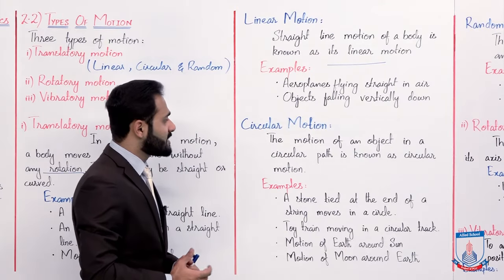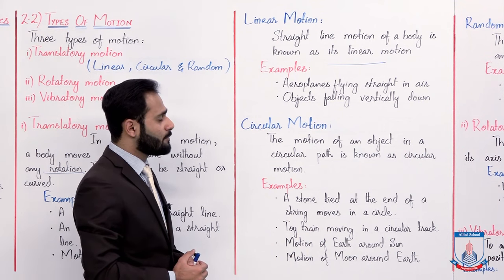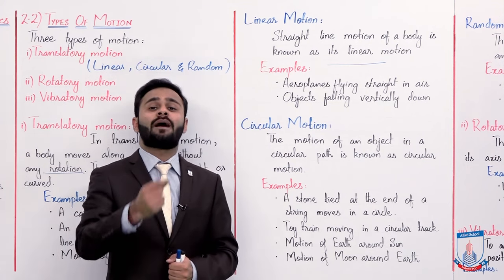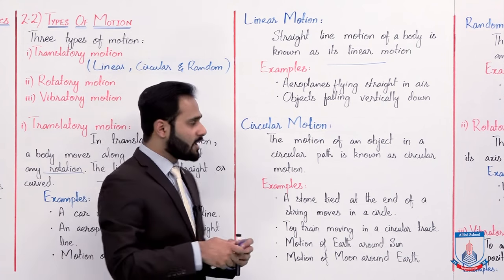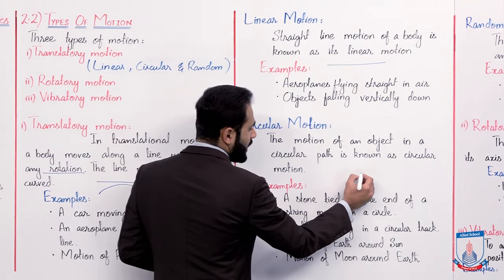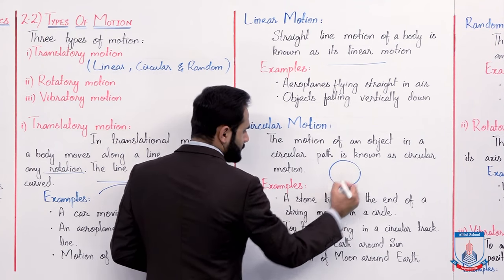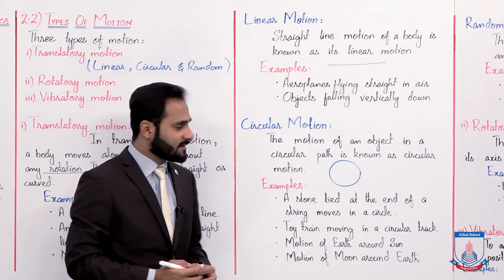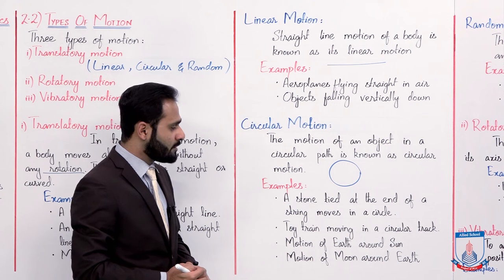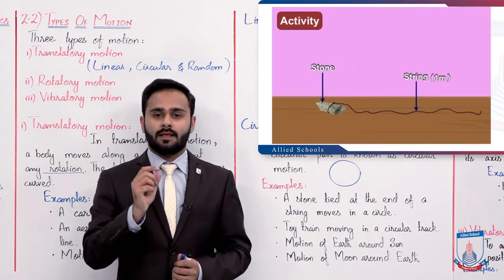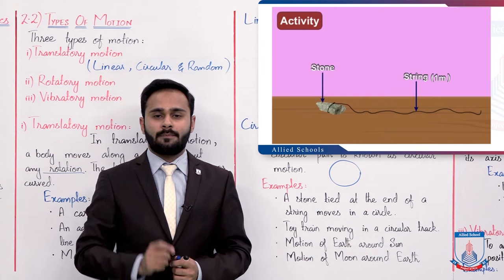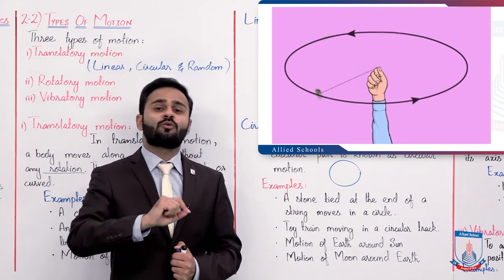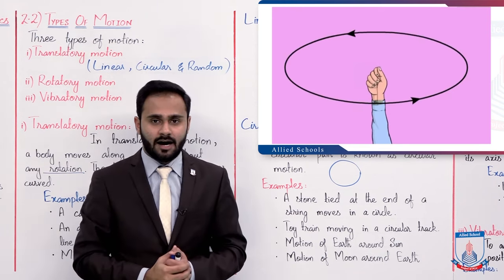So the next type: circular motion. The motion of an object in a circular path is known as circular motion. Toh ek object ka motion agar circular path mein hoga, toh usse hum kahenge circular motion. Like for example, a stone tied at the end of a string moves in a circle — aap ne ek stone ko tie kar liya, aur ab string ko move karte hain, toh is stone ka jo motion hoga yeh circular motion hoga, because yeh circular path mein move kar rahi hai.